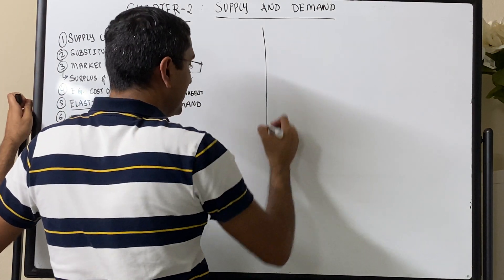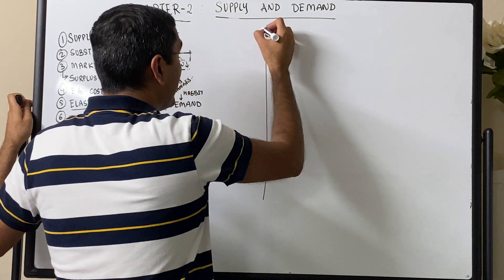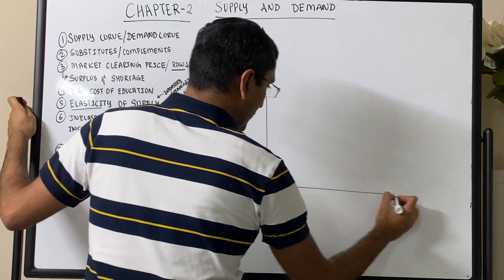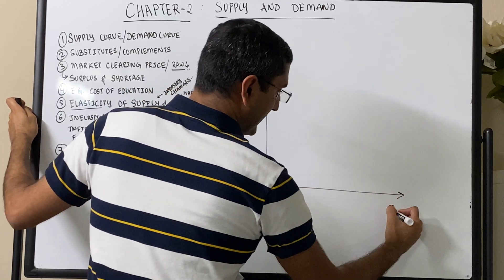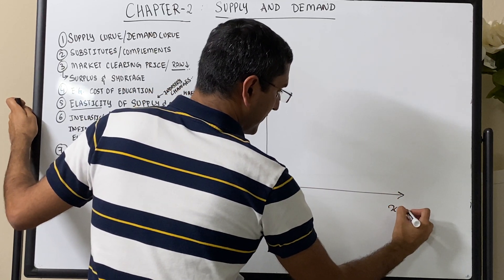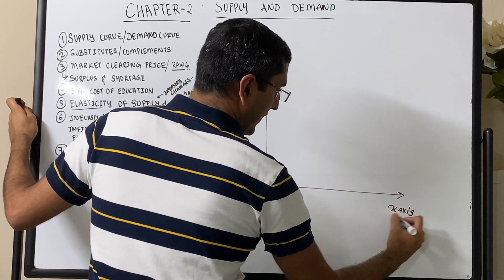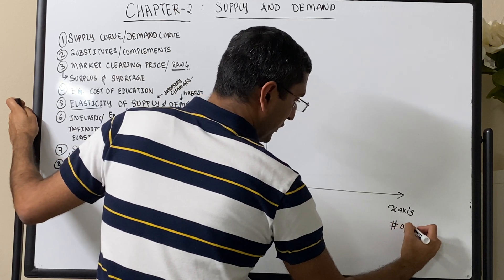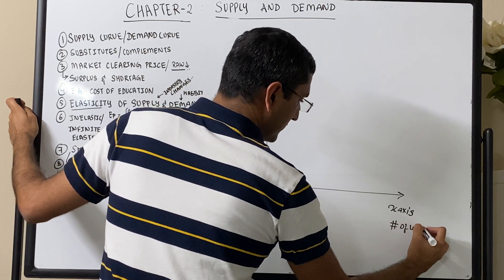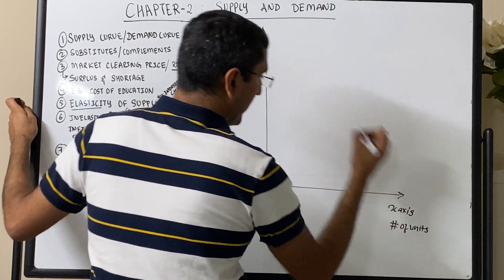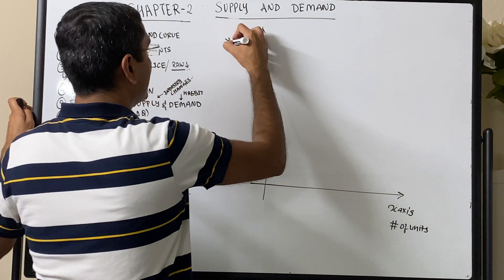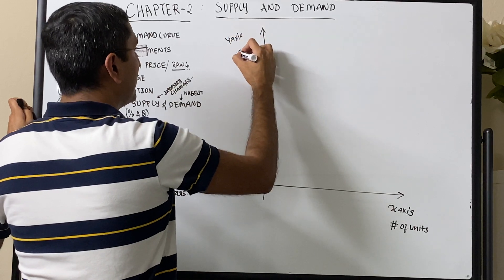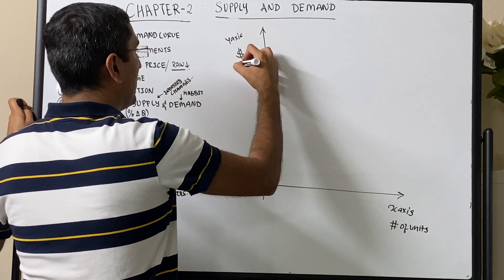To understand supply and demand, we have to use a graph with the x-axis representing the number of units produced, and the y-axis representing the dollar amount.